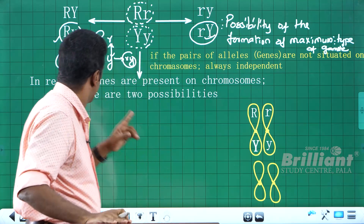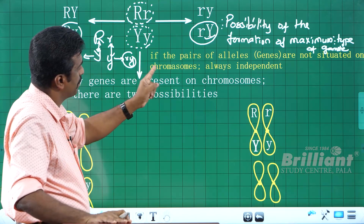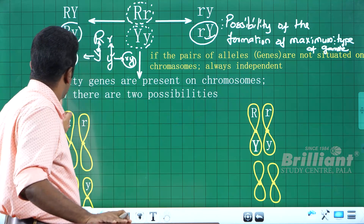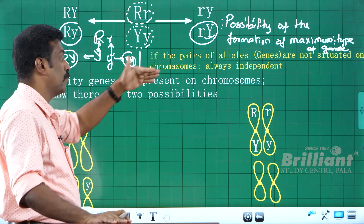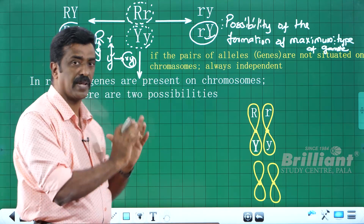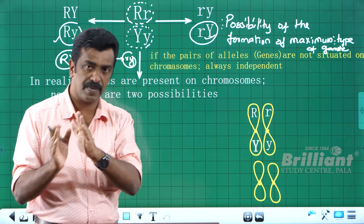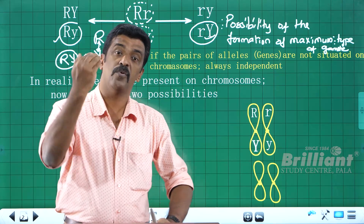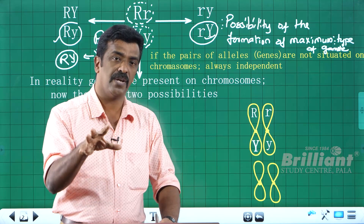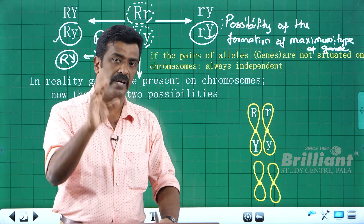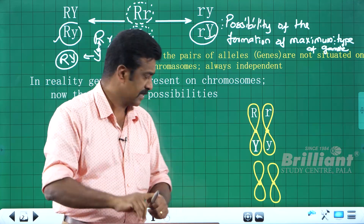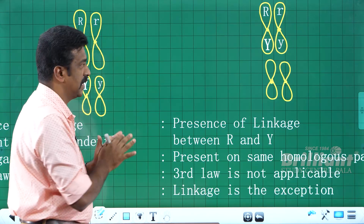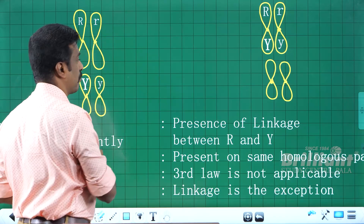In reality, genes are present on chromosomes. There are two possibilities: pair of alleles on the gene, the chromosome. We can look at two pairs of chromosomes. Deployed cell — this is 2n=4. There are two pairs of chromosomes. Possibility number one: the gene is on the chromosome.